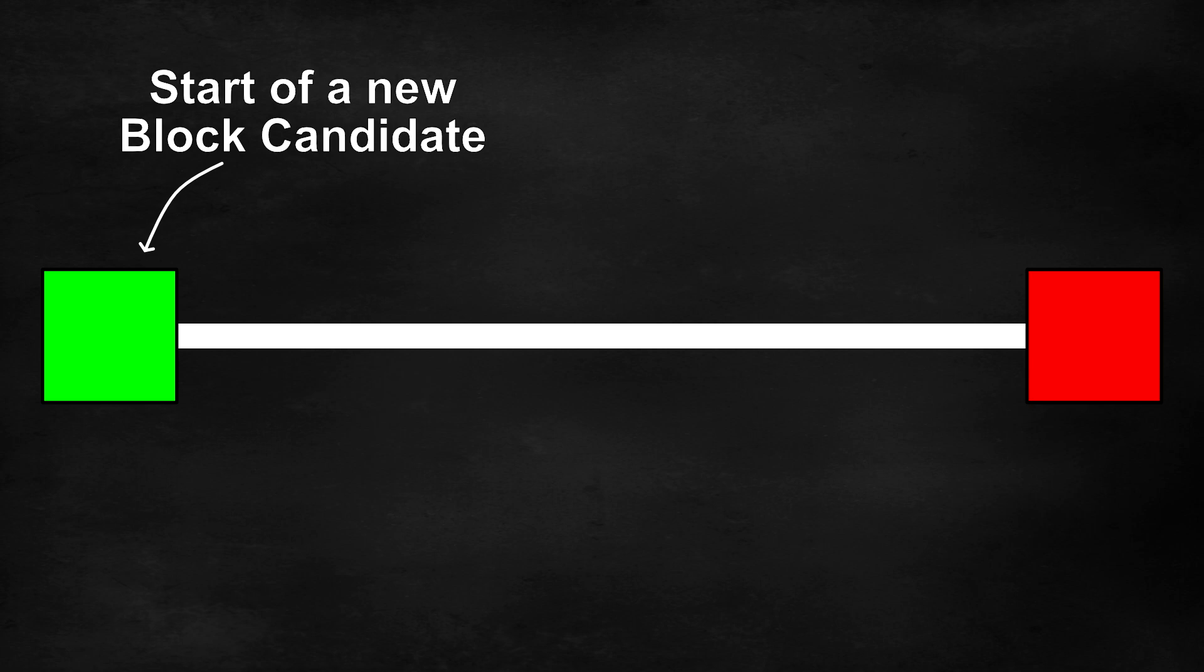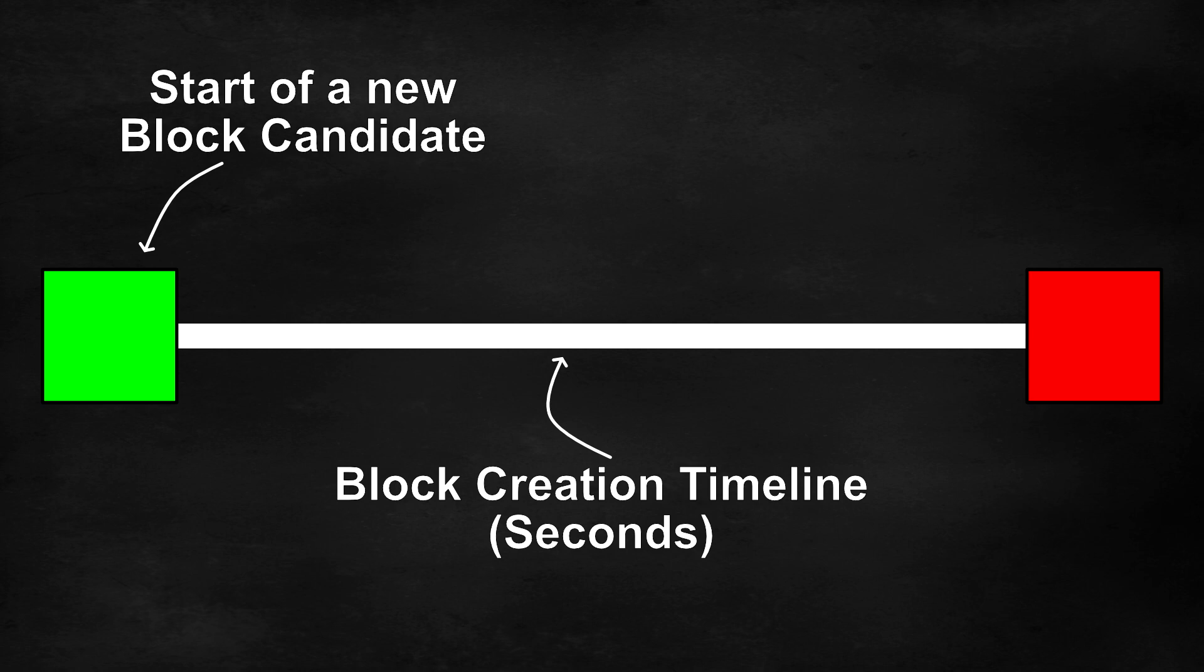The white line represents the time period in which transactions can be added to the block, added to the piece of paper.